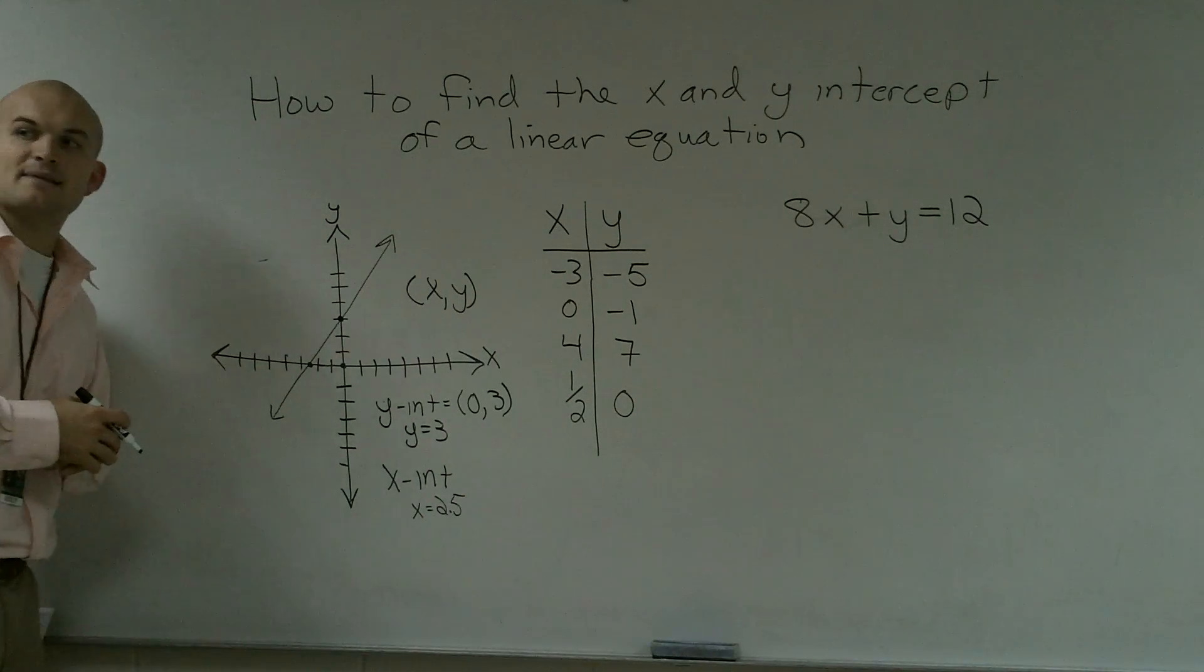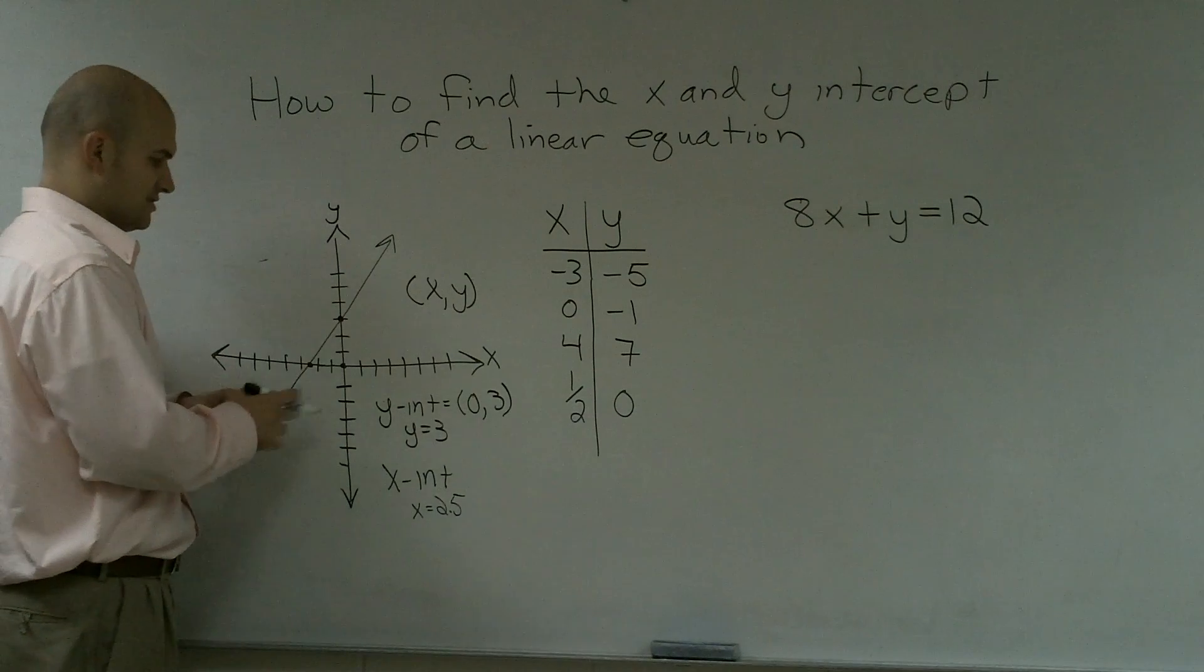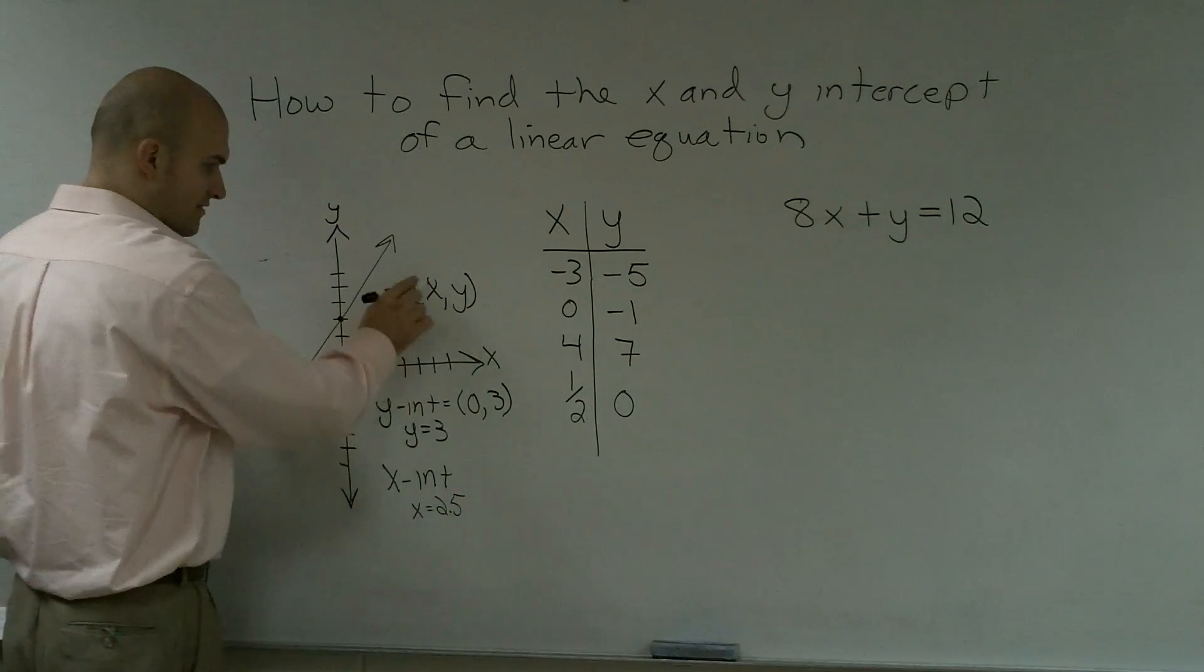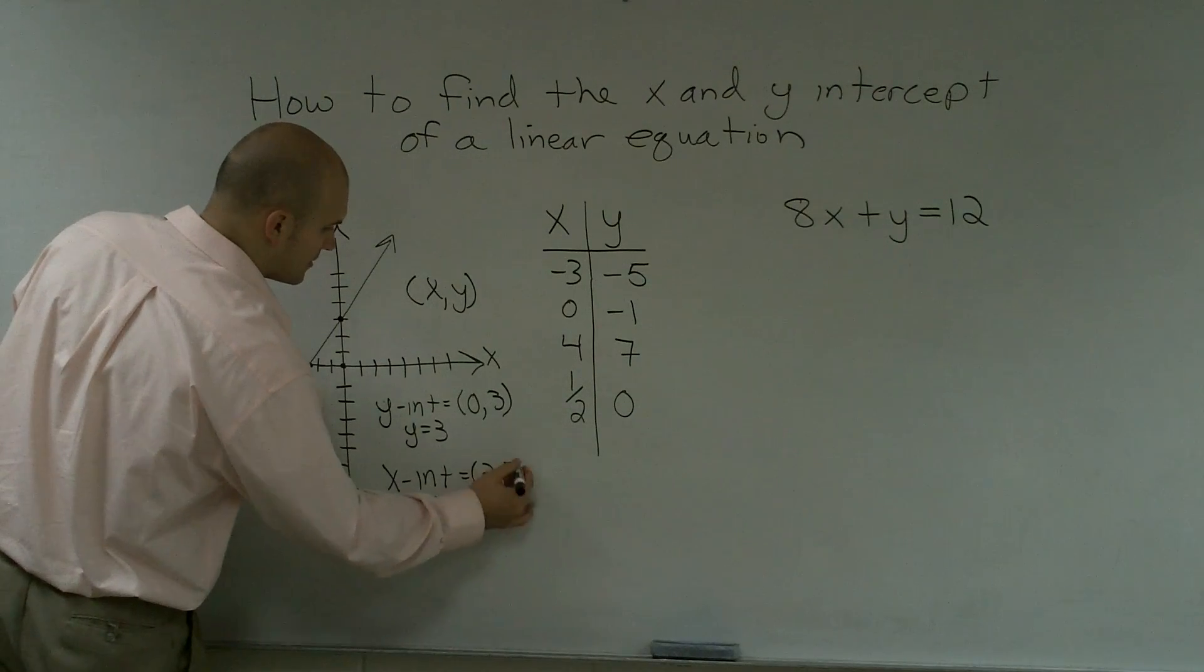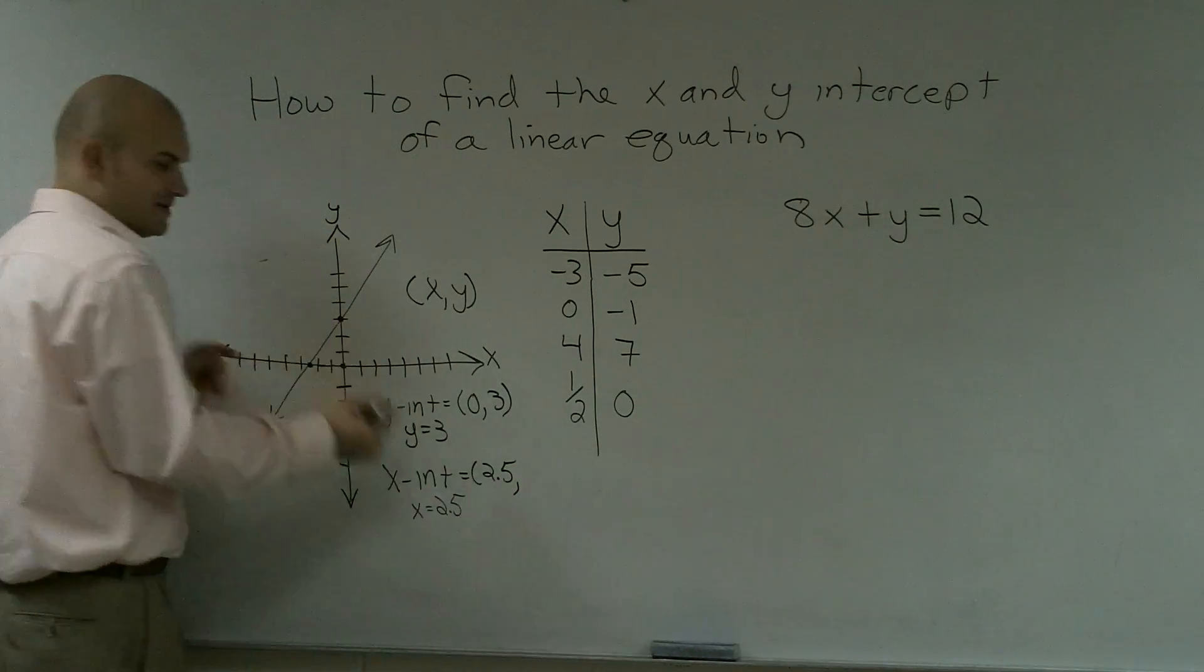Now, if I want to write this as a point, I would say that the x-intercept is at the point, well, x value is 2.5, and my y value is going to be 0.